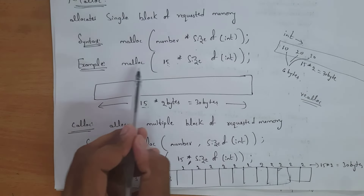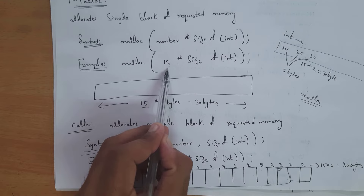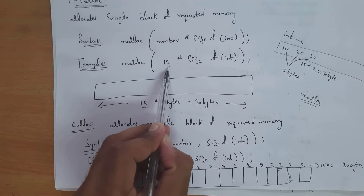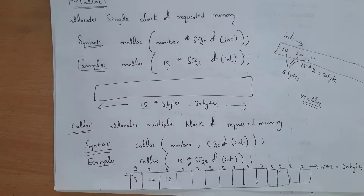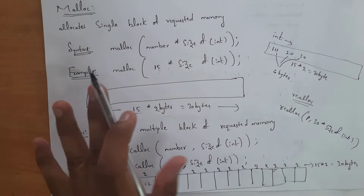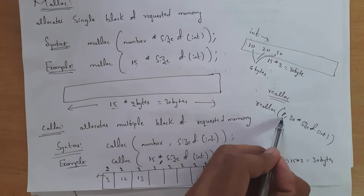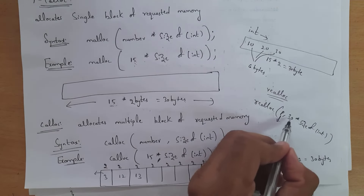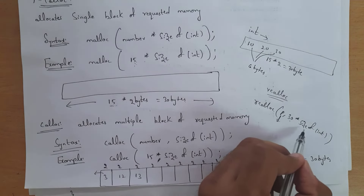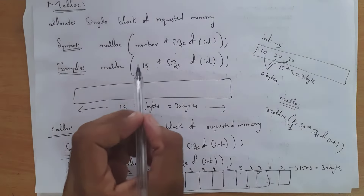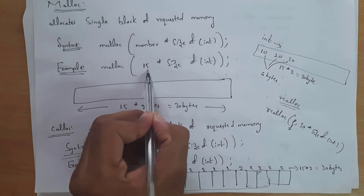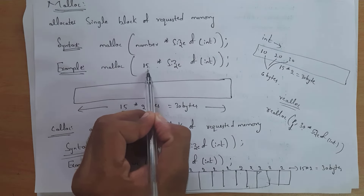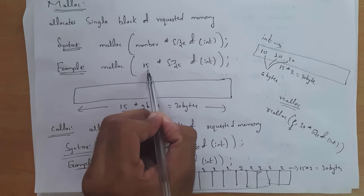Next is realloc. For example, in malloc we given size as 15, but if you want to increase this size to 30 you need to use the realloc function. If you want to change the given size, you use realloc. The syntax is: realloc(p, 30 * sizeof(int)) — you write the variable name and the new size. Whatever memory you assigned, you need to delete it at last using the free function.